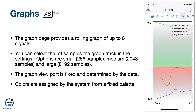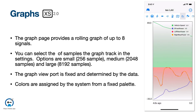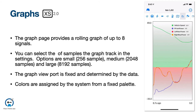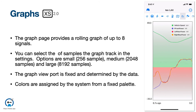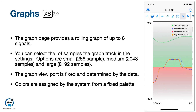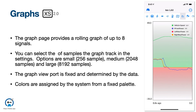The graph page provides a rolling view of up to eight signals. You can configure the number of samples on the settings screen, and this determines the length of the x-axis. The graph will determine its own viewport, and colors are assigned by the system.